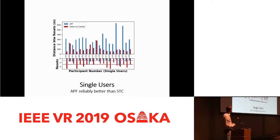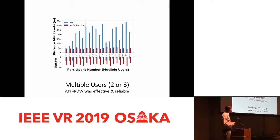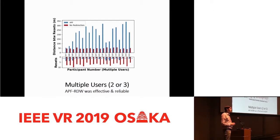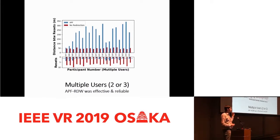This was fairly consistent — only one participant out of 20 had more resets with artificial potential fields. For multiple users, we ran people in sets of two or three at a time and saw very low resets. On average, in four minutes of walking, they would have just over one reset even with multiple people in the room. There's no other multi-user redirected walking algorithm we can benchmark against, so we compared to a no-redirection condition. The take-home message is that it worked really well — we dramatically reduced resets and it didn't fall apart when we added a third user.